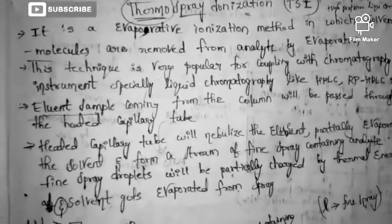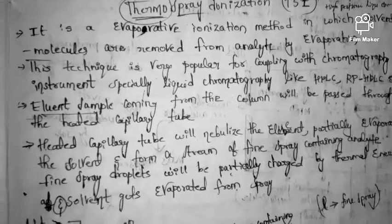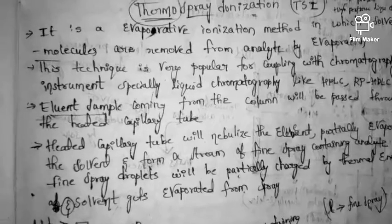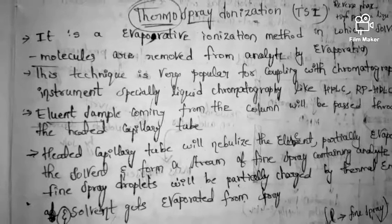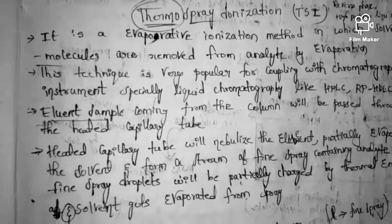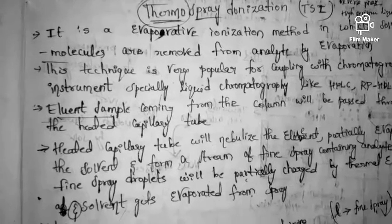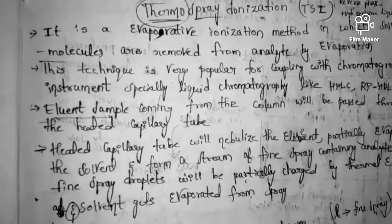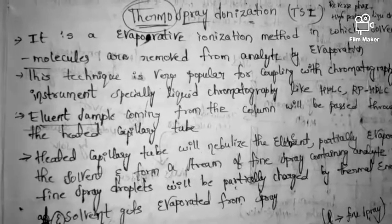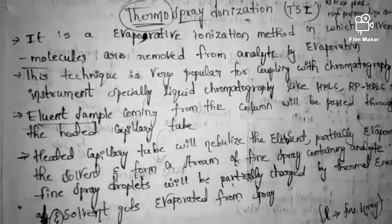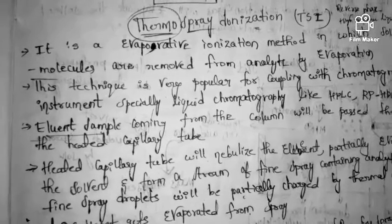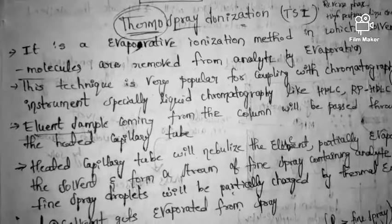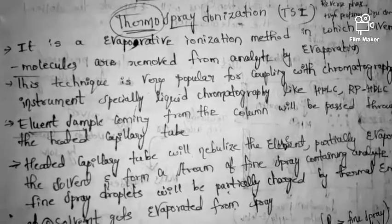Hello friends, good morning, welcome to our chemistry class. Today we are going to discuss about one of the ionization methods in mass spectrometry. In our previous class we discussed about fast atom bombardment. Today in this class we are going to discuss about thermospray ionization.